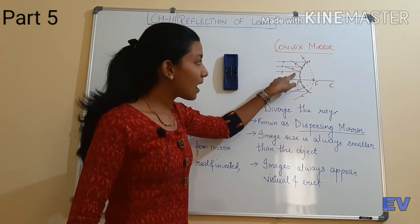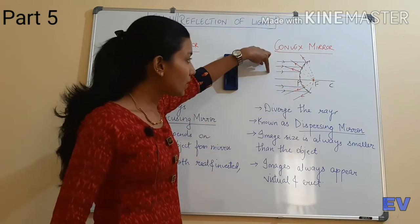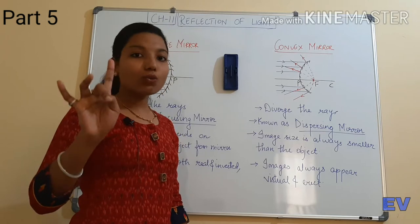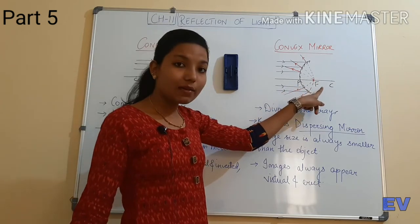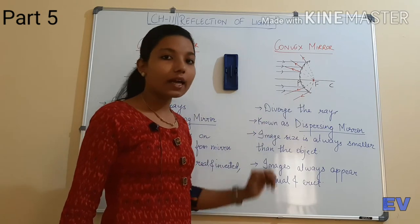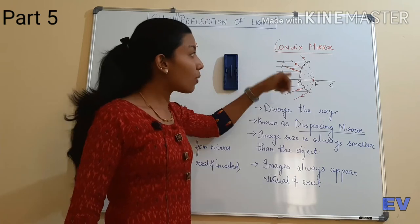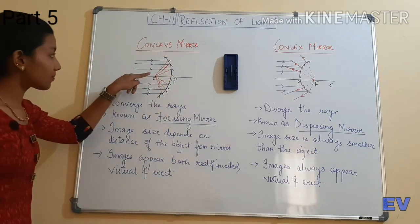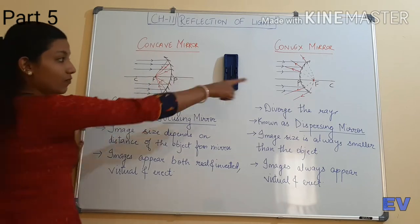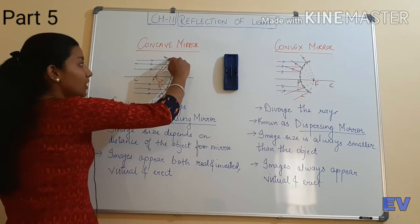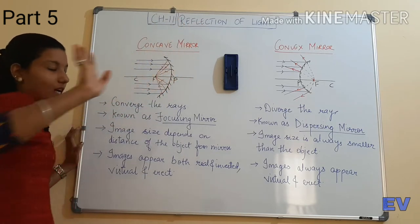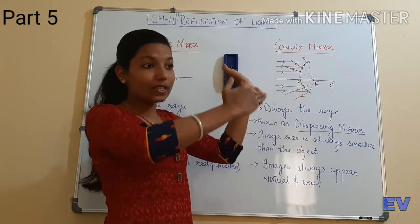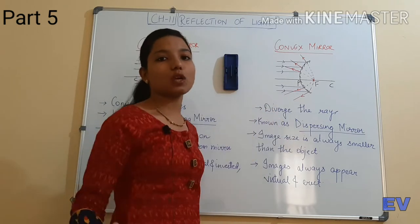Parallel to the principal axis, it should reflect through the focus according to rule number one. But can you see the focus on the right-hand side? The focus is not there on this side. This is why we have dotted the reflected ray — it appears that it is coming from the focus. If the ray comes directly on the focus, we dot it and understand that the reflected ray, when extended, should be focused.